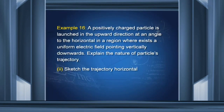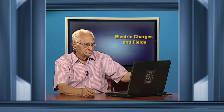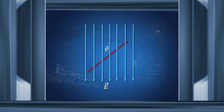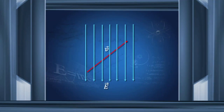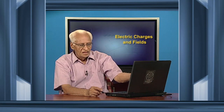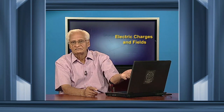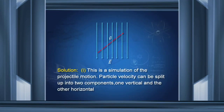Problem: A positively charged particle is launched upward at an angle to the horizontal in an electric field. Resolving the velocity into components along and perpendicular to the field — perpendicular has no force, along the field there is a force — this is analogous to projectile motion. The perpendicular component decreases to zero and reverses, while the horizontal component continues. The path taken is therefore that of a projectile.